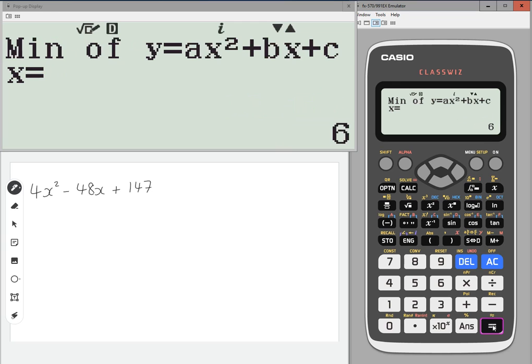What you want to do is press equals again. And what it does is it gives you the x value of the minimum. So effectively, it tells you the coordinates of the vertex.